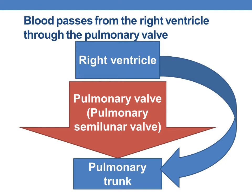After entering the right ventricle, the ventricles primarily pump blood into the arteries. The blood passes from the right ventricle into the pulmonary trunk through the pulmonary valve, also called the pulmonary semilunar valve. It is called semilunar because it has three cusps of crescent moon shape.